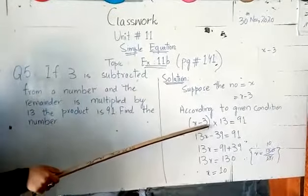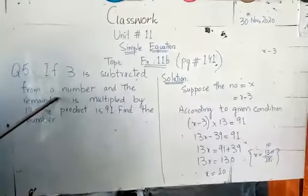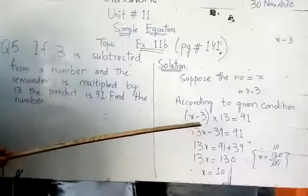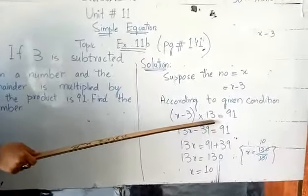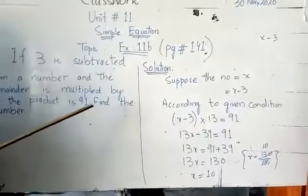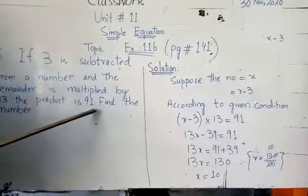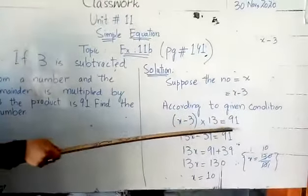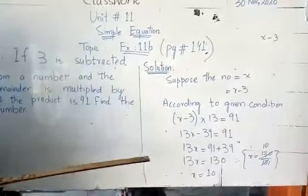If 3 is subtracted from a number, from a number we choose x minus 3, and the remainder is multiplied by 13. We have to multiply the remainder by 13. So 13 multiplied by (x minus 3), and the product is 91, so it equals 91.